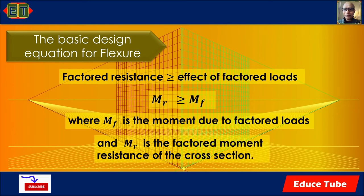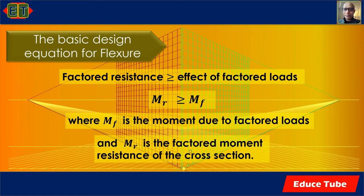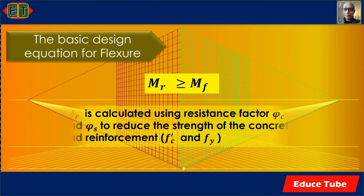The basic design equation for flexure states that factored resistance must be greater than or equal to the effect of factored loads — symbolically, Mr ≥ Mf, where Mf is the moment due to factored loads and Mr is the factored moment resistance of the cross section. Mr is calculated using two resistance factors, φc and φs, to reduce the strength of concrete f'c and reinforcement fy respectively.